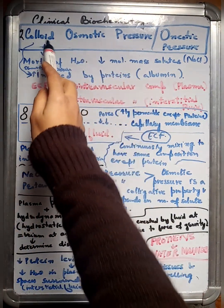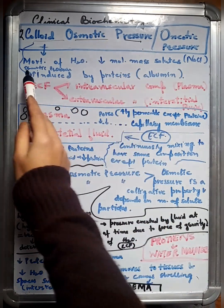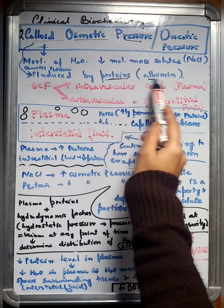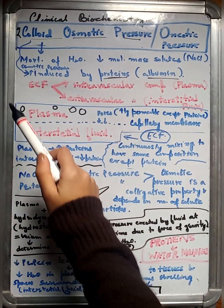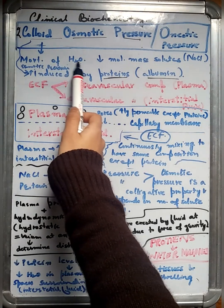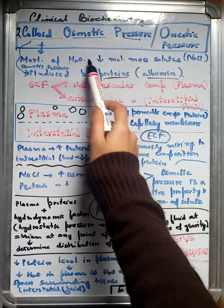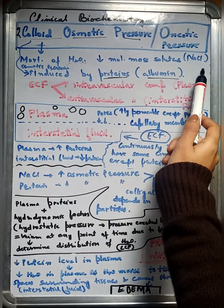So let's first understand what is this colloid osmotic pressure. It's an osmotic pressure that's induced by proteins, especially the albumins. This type of osmotic pressure is responsible for the movement of water and also results in the movement of low molecular mass solutes.